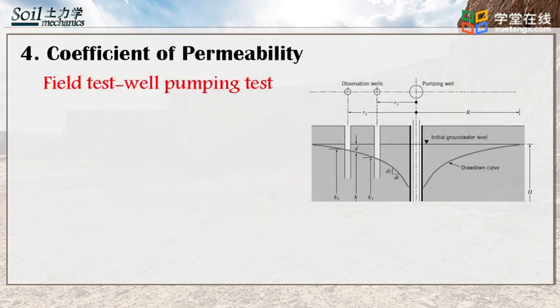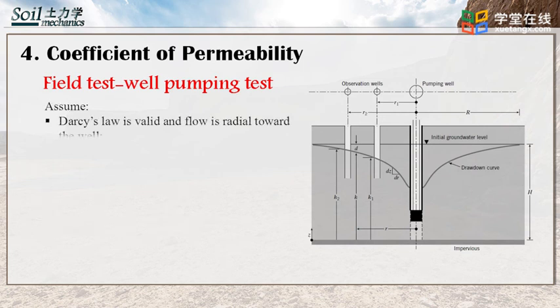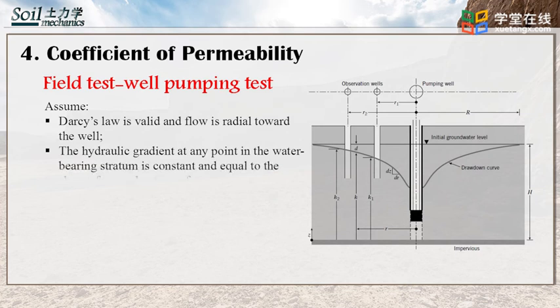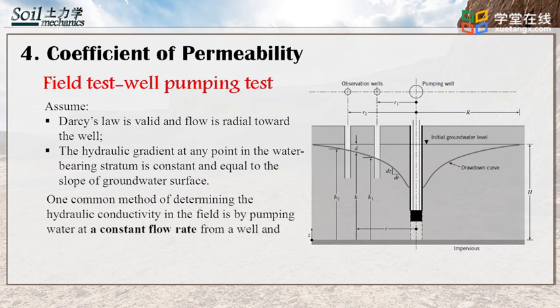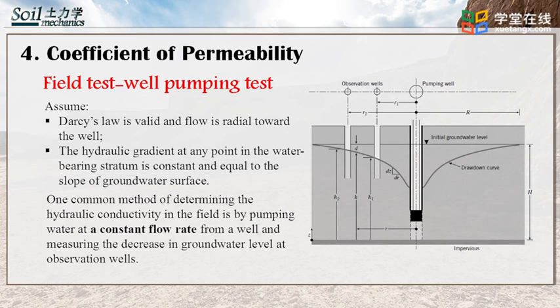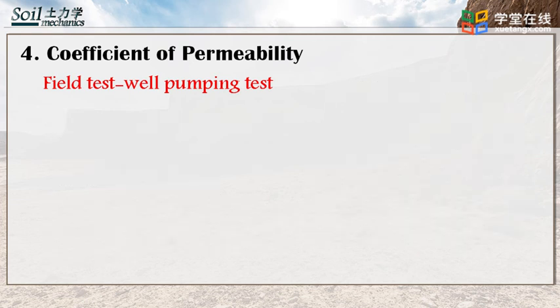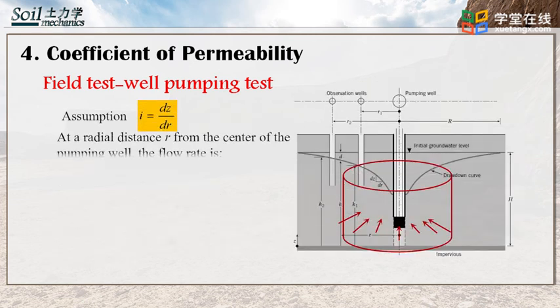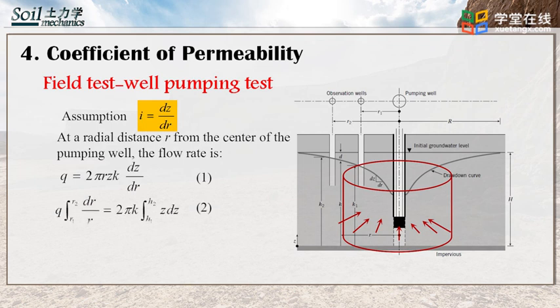In the field, the average coefficient of permeability of a soil deposit in the direction of flow can be determined by performing pumping tests from wells. During the test, water is pumped out at a constant rate from the test well with a perforated casing. Several observation wells at various radial distances are made around the test well. Continuous observations of the water level in the test well and in the observation wells are made after the start of pumping, until the steady state is reached. The rate of flow of groundwater into the well q equals the rate of discharge from pumping, which can be written as equation 1. Through integration from R1 to R2 on both sides as equation 2, the coefficient of permeability can be obtained, expressed as equation 3.